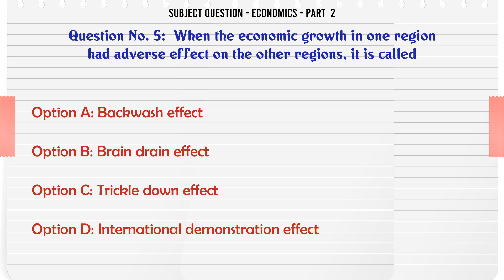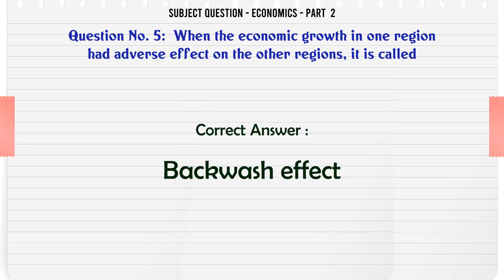When the economic growth in one region has an adverse effect on the other regions, it is called: A. Backwash effect. B. Brain drain effect. C. Trickle-down effect. D. International demonstration effect. The correct answer is: Backwash effect.